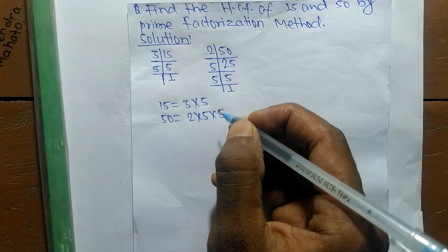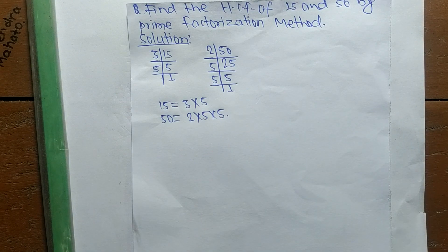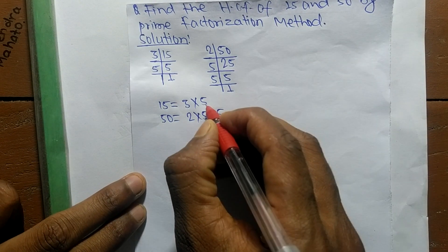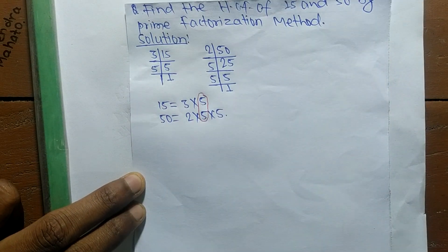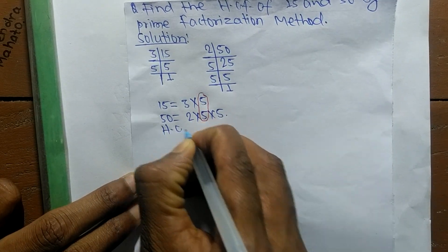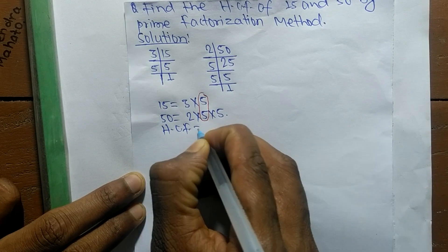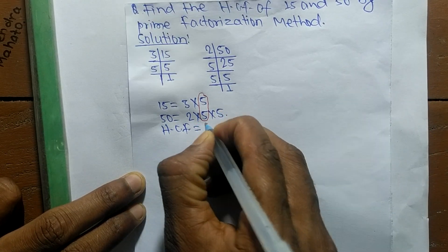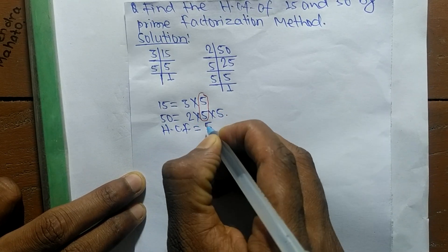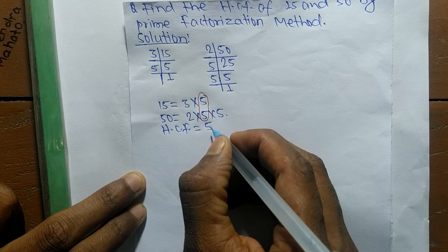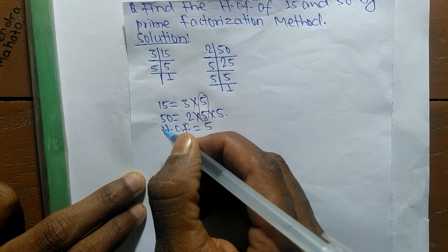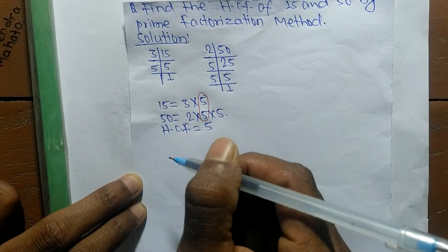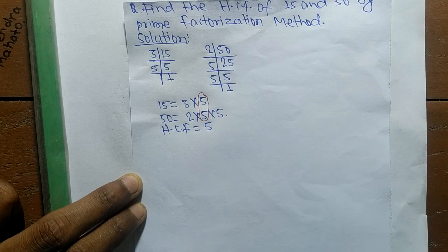From these prime factors we now have to find out the common factors. The common element here is 5, so the HCF is equal to 5. Therefore, 5 is the HCF of 15 and 50. That's all for today — thanks for watching.